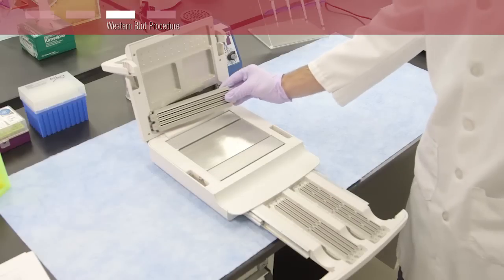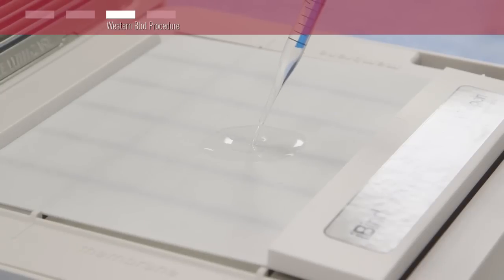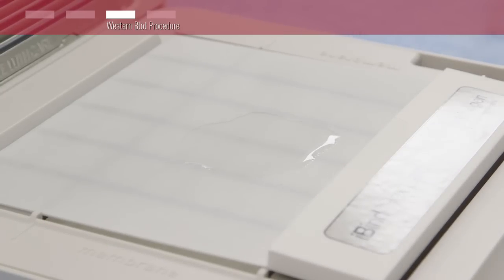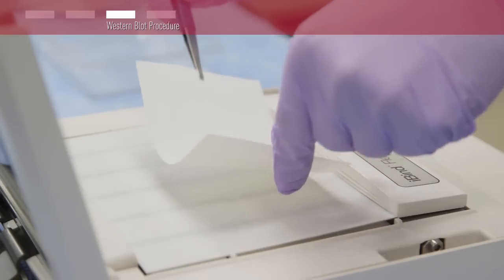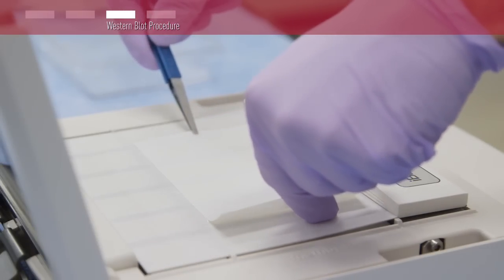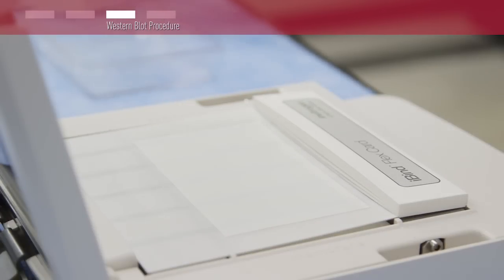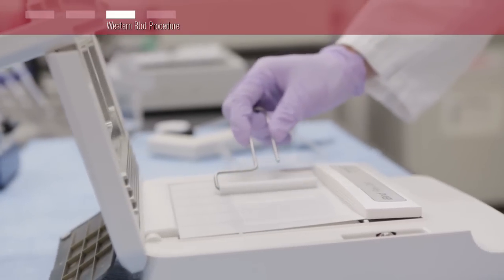To process a midi sized blot, first make sure the midi well insert is installed. Then add an additional 2 milliliters of 1X iBind Flex solution to the card, allowing it to pool per the quick reference card for midi sized blots. Place your blot protein side down across the membrane region indicated on the device, with the low molecular weight bands closest to the stack. Use the roller to remove any air bubbles.